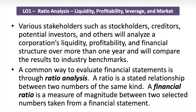Various stakeholders — stockholders, creditors, potential investors, and others — will analyze a company's liquidity, profitability, and financial structure over time and compare the results to industry benchmarks to see if the company is better or worse than its competitors. Ratios are common metrics used to evaluate the financial health of companies in an industry. A financial ratio is a measure of the magnitude between two selected numbers taken from a financial statement. Since ratios are essentially fractions, we do a lot of dividing one thing by another, allowing comparison across companies using common metrics.